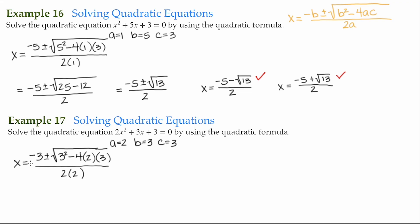We go ahead and do the arithmetic. This is going to be negative 3 plus or minus the square root of 3 squared, which is 9. Negative 4 times 2, that's negative 8, and negative 8 times 3, that's negative 24, all over 2 times 2, which is 4. This then comes out to be negative 3 plus or minus the square root of 9 minus 24, that's the square root of negative 15, all over 4.